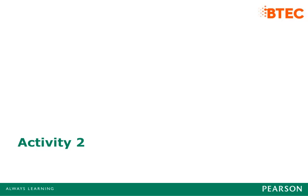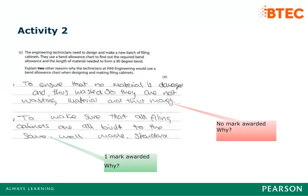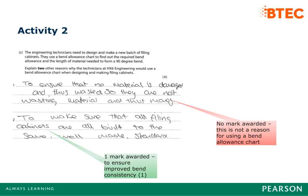Activity 2: Explain why the marks have and have not been awarded for this response. The answer: the first response has no rewardable content as it is not a valid reason for using a bend allowance chart. The second response makes reference to bend consistency in the form of 'filing cabinets are all built to the same, well made standard'. There is no second mark for this response as there is no linked explanation. Key message: use linked responses to access the second mark for the explanation on each reason.